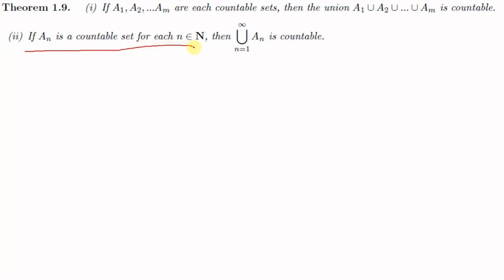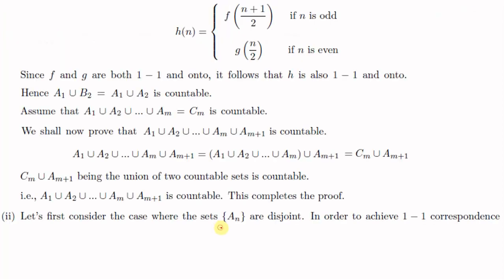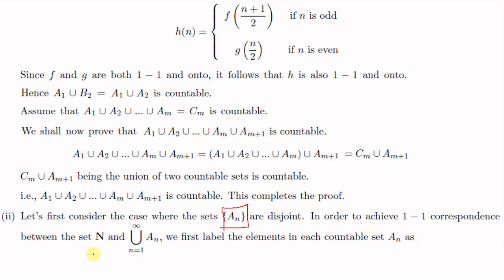For the second part: if An is a countable set for each n ∈ ℕ, then ⋃(n=1 to ∞) An is countable. To prove this, we establish a one-to-one onto mapping from ℕ to ⋃(n=1 to ∞) An. We first label the elements in each An as An = {an1, an2, an3, ...}.